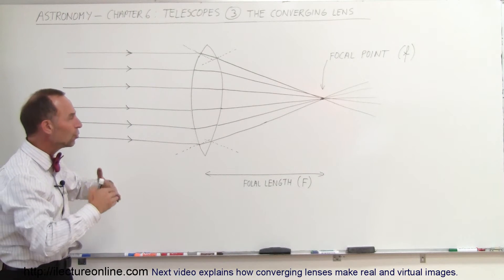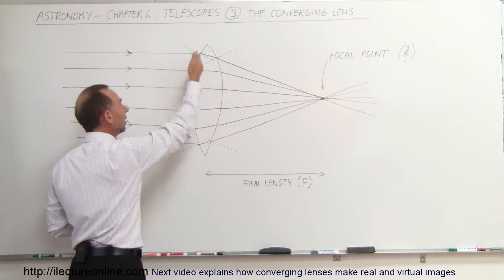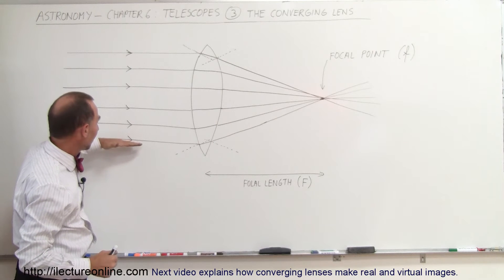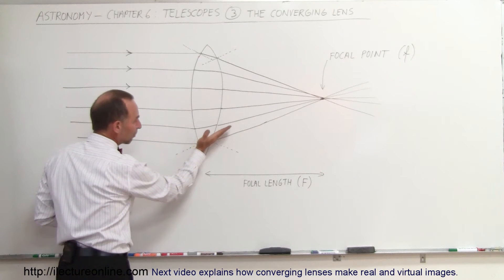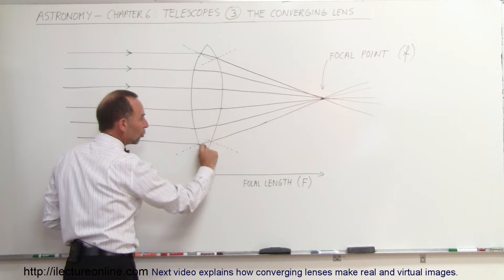Now how does it work? Why do the rays do that? Well, notice that since the glass is bent like this, because it is indeed a converging lens, you can see that when a ray hits the lens, like right there, and we draw a line perpendicular to the boundary, the light will bend towards the normal.